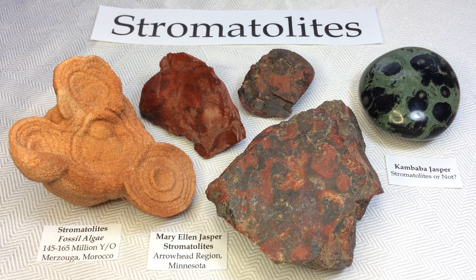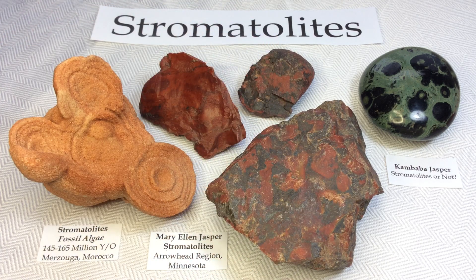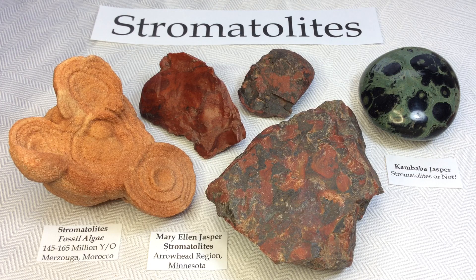The next specimens I want to show you are these three here in the center, which are called Mary Ellen Jasper. I'm not sure if it's a true geological name or more of a market name, but it's a very lovely name. And they are also specimens of stromatolites. They generally come from the Arrowhead region of Minnesota.